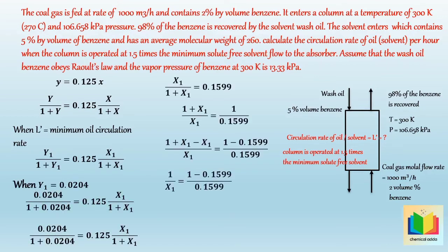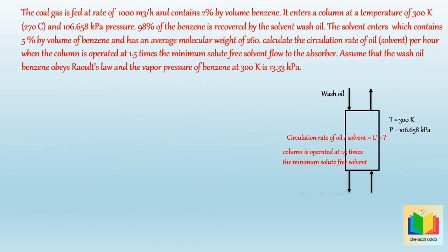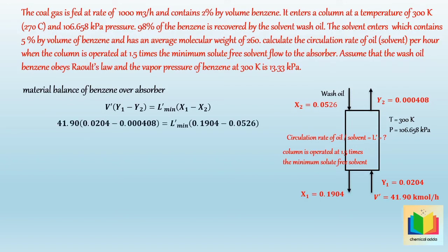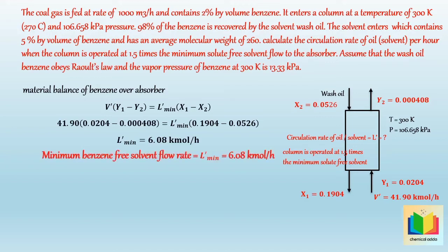After solving, X1 equals 0.1904. So all values are: X1 = 0.1904, X2 = 0.0526, Y1 = 0.0204, V dash = 41.90 kmol per hour, Y2 = 0.000408. Now we can calculate L dash minimum from the material balance of benzene over the absorber. After putting in values and solving, L dash minimum equals 6.08 kmol per hour.